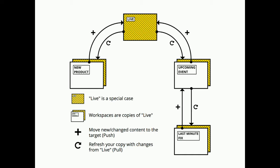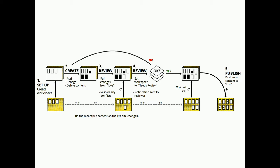New product and upcoming event are sort of copies of the live workspace, where live is the upstream. The last-minute fix being worked on has the upcoming event as its upstream. You can see how you can pull down updates from your upstream workspace, and how you can push additions to your upstream workspace as well.